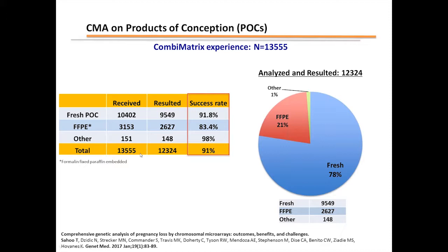Of the 13,555 samples that we received, a vast majority were fresh, a significant fraction were formalin-fixed paraffin-embedded, and a small subset included cell culture, DNA, etc. Our success rate is quite impressive: we can achieve results in over 91% of fresh samples, over 83% of FFPE samples, and close to 98% of other sample types — giving us an overall success rate of approximately 91%. Compared to conventional cytogenetic analysis of miscarriage samples, this is extremely impressive.